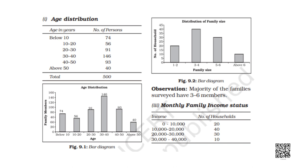First, we have the tabular presentation of the age distribution. On screen, we have age in years: below 10 there are 74 people; age group 10 to 20 has 56 people; 20 to 30 has 91 households; 30 to 40 has 146 people; 40 to 50 has 93 households; above 50 has around 40 households — totaling 500. This has been represented as a bar diagram, showing that most surveyed people belong to the age group 30 to 40.